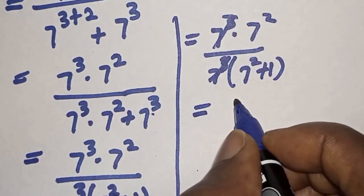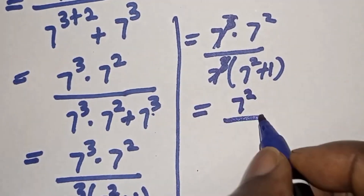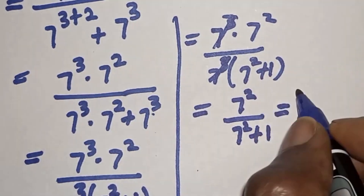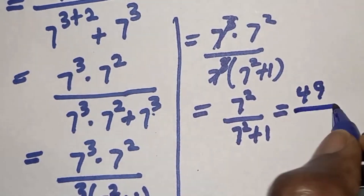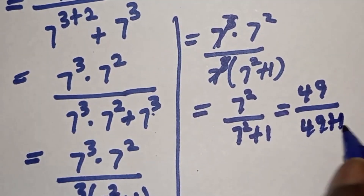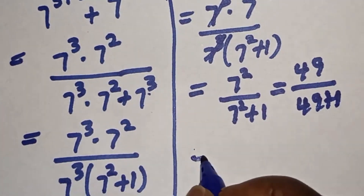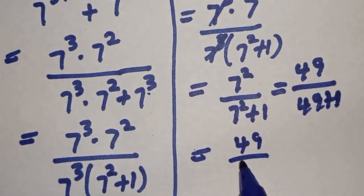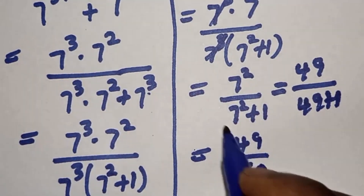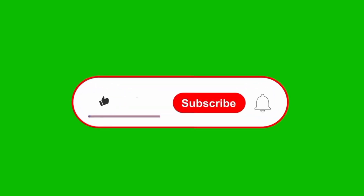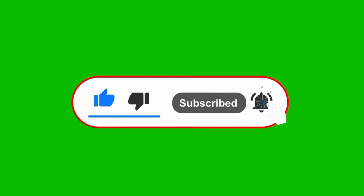This is equal to 7 squared over 7 squared plus 1, which is 49 over 49 plus 1. So this is equal to 49 over 50. And this is the final answer.